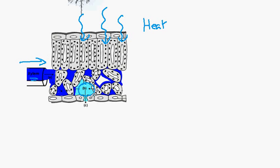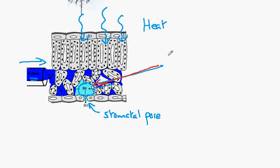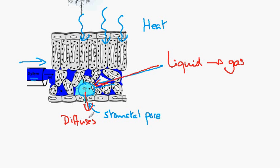Just above the stomatal pore is where the phase change occurs from liquid to gas — the evaporation. What then occurs is that the water vapour gas diffuses through the pore down a fairly steep diffusion gradient.